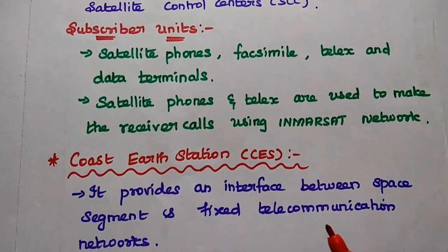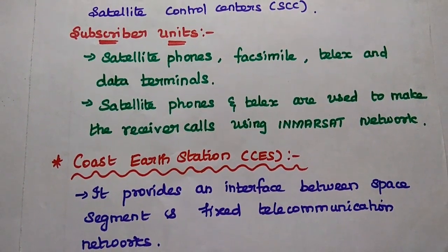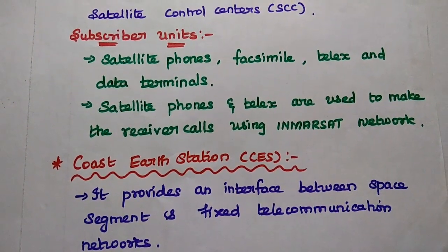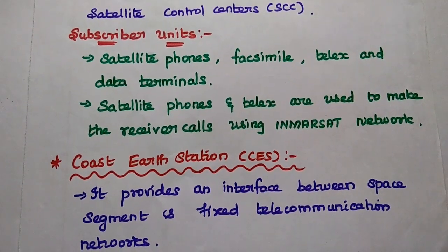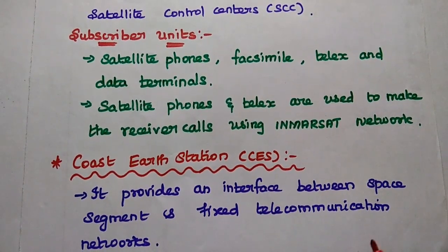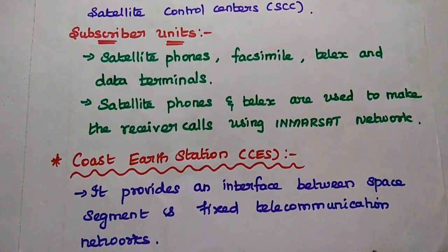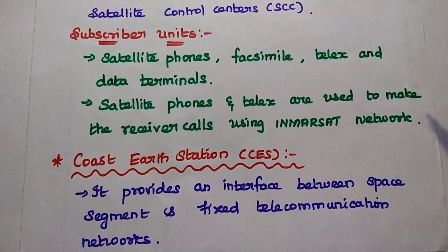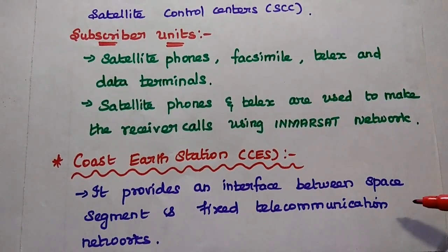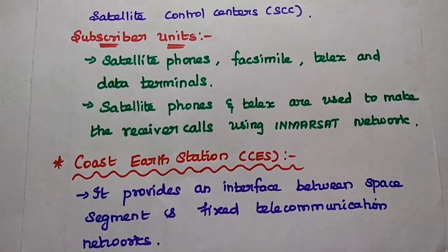The Coastal Earth Station provides an interface between the space segment and the fixed telecommunication network. It is very important to provide the interface between the satellite section as well as the ground section.